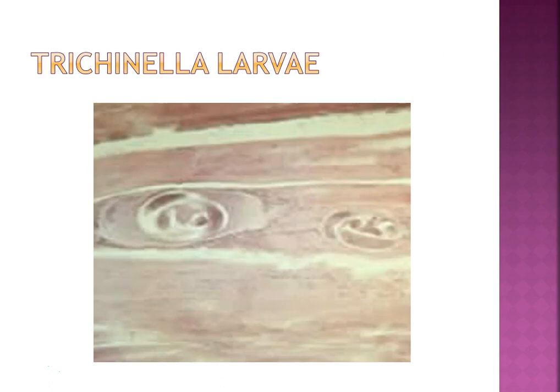Trichinella is the encysted organism that coils up in nurse cells in the muscles. It comes from meat — mostly pork. It travels through the bloodstream, gets into the muscle, and eventually dies. The specimen of choice is a biopsy of the infected muscle. Muscle enzymes are elevated due to muscle damage. Trichinella is known as the great imitator because it resembles other types of infections, especially the flu.